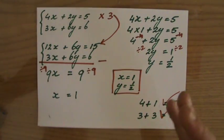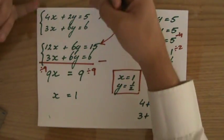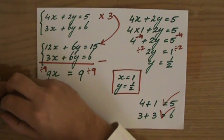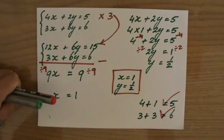So my answer, the only possible solution to this problem is when x is 1 and y equals a half, both of the equations are correct simultaneously. Good. I have more examples for you to look at. Enjoy.